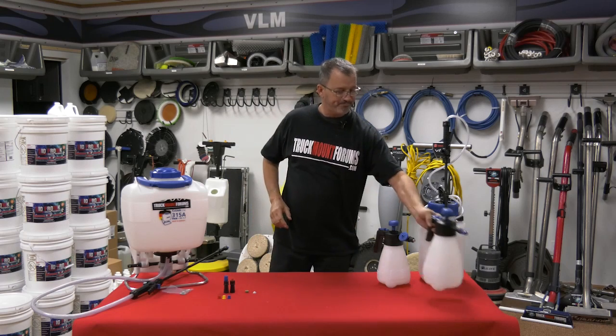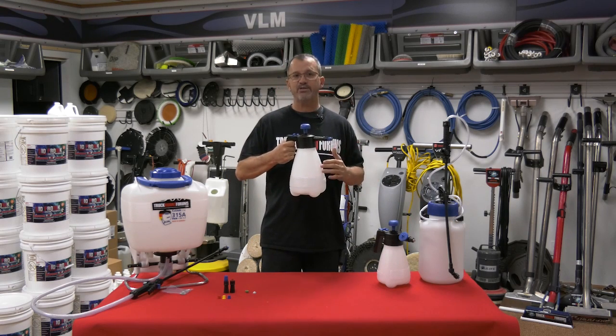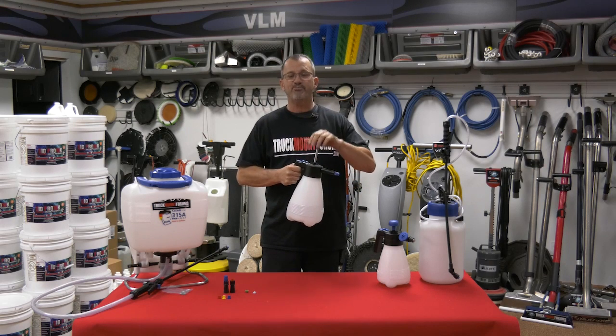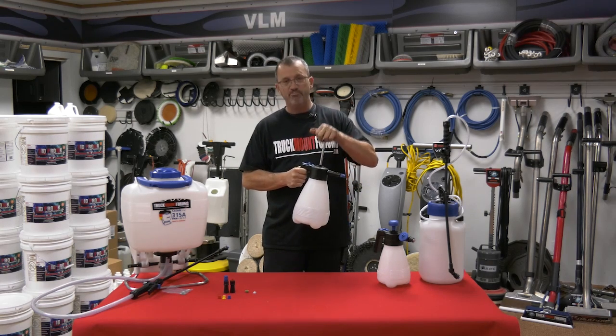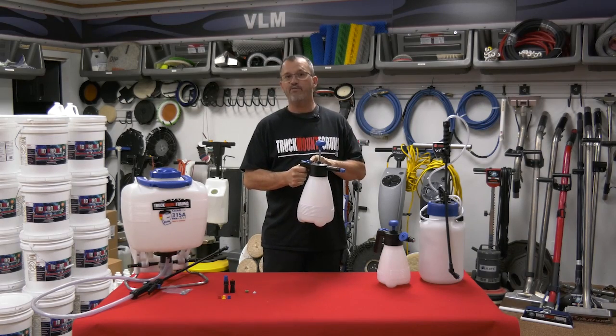I'm going to start first of all with what I call the half gallon sprayer. It has liters on it, has ounces and it goes up to 70 ounces. Also, you can pump it up to 45 psi, so you can pump it and pump it. Once it reaches that 45 psi, it won't go any further, it'll release.